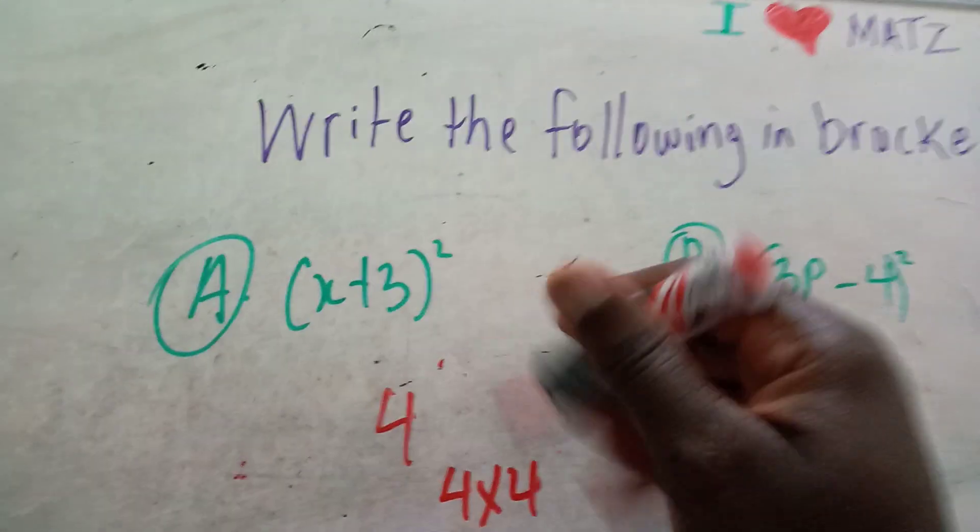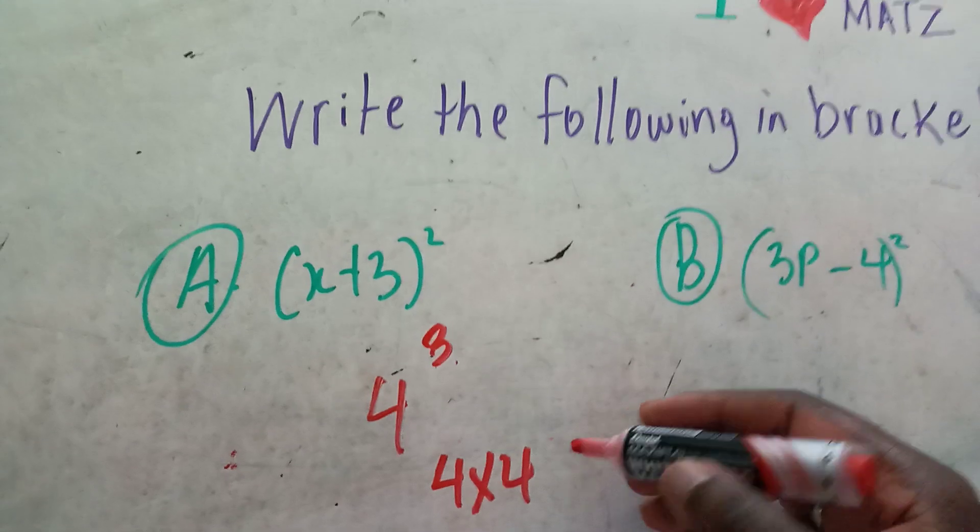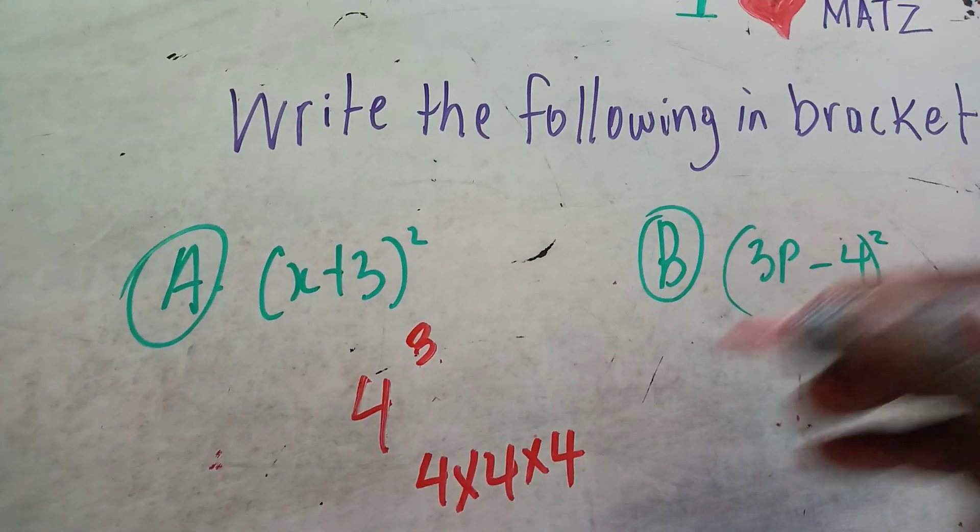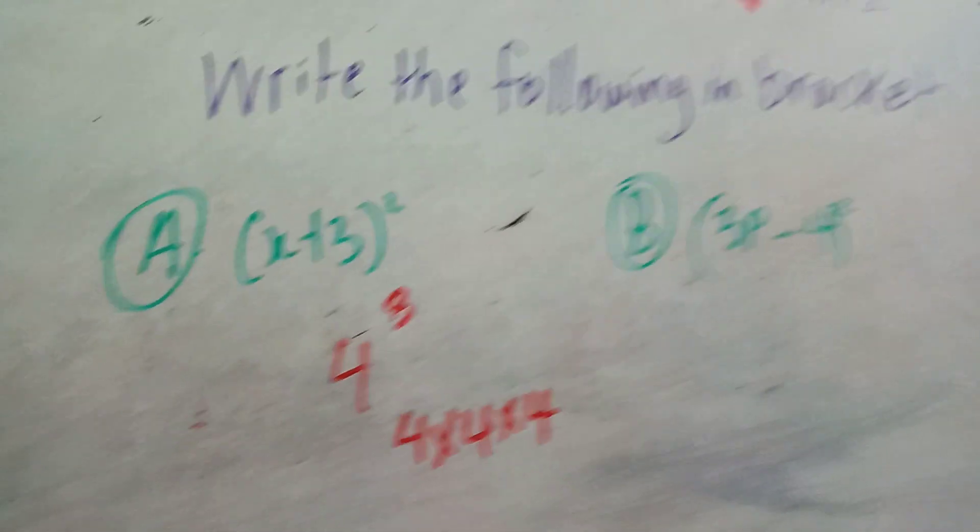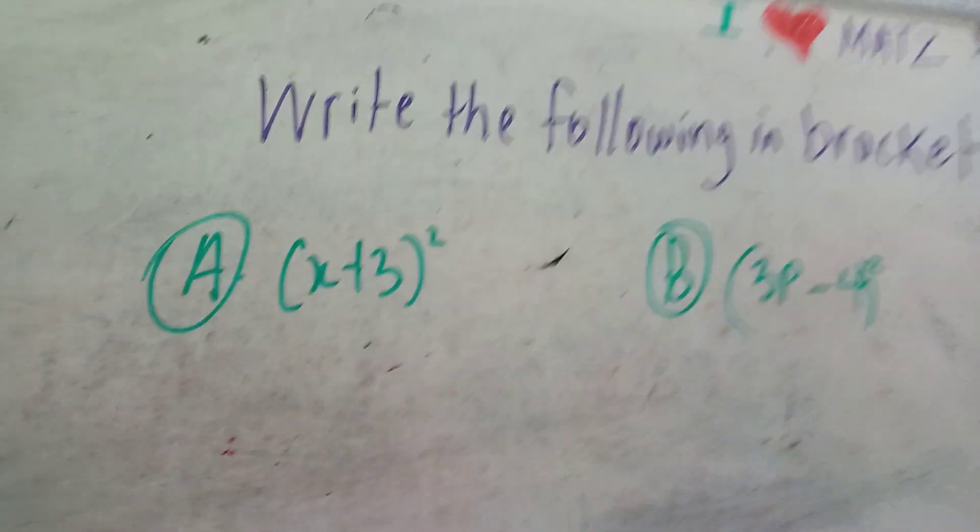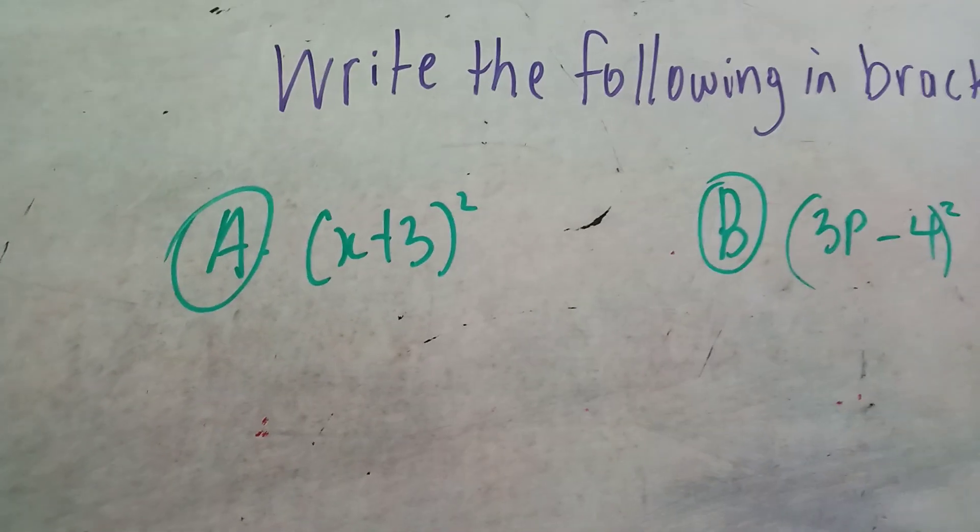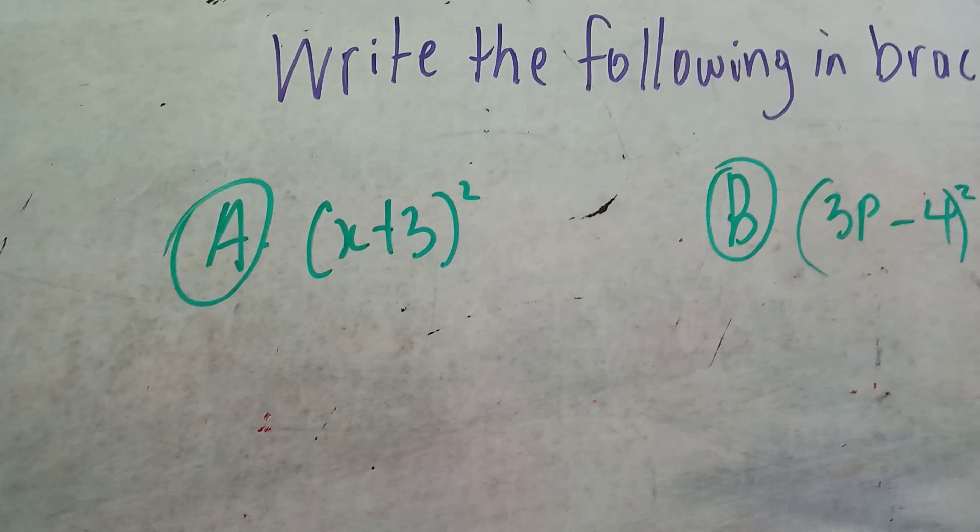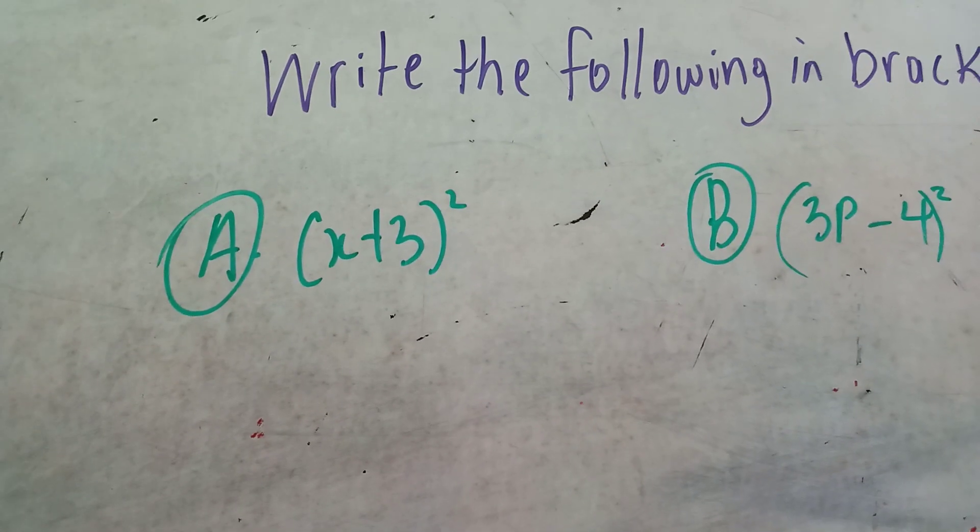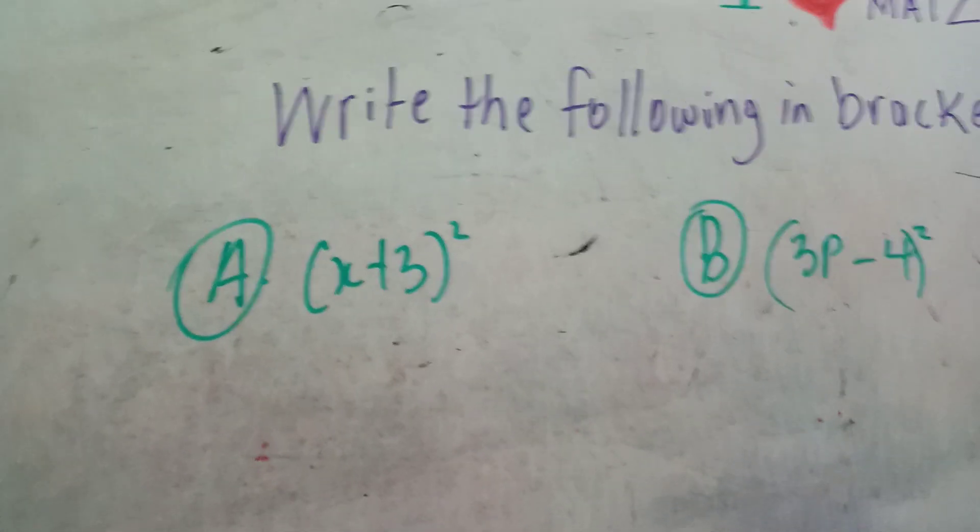If you're seeing three, it means you should multiply by itself three times. So this is showing us that we should multiply (x+3) by itself two times. And what would that give us?